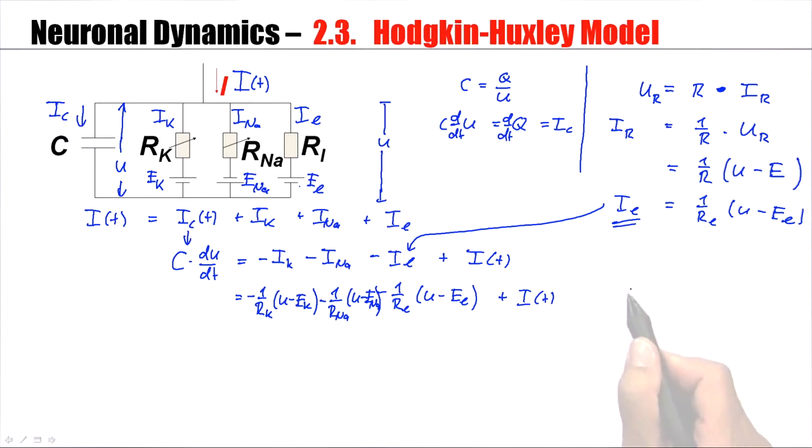Suppose I have a channel. And this channel is open, which means ions can flow through the channel. Even if the channel is open, it has some finite width. That means, even if the channel is open, it has some resistance. One over the resistance is a conductance. So, even if the channel is open, it has a conductance.